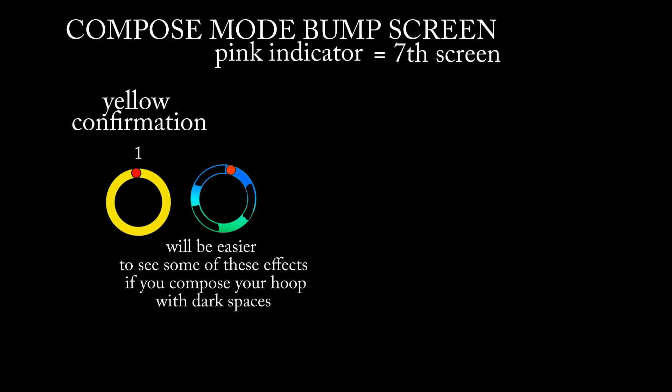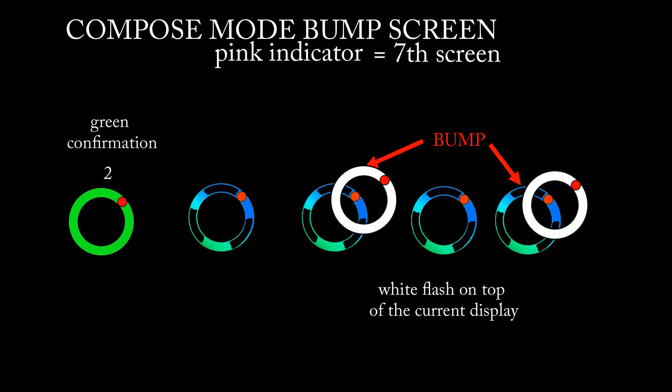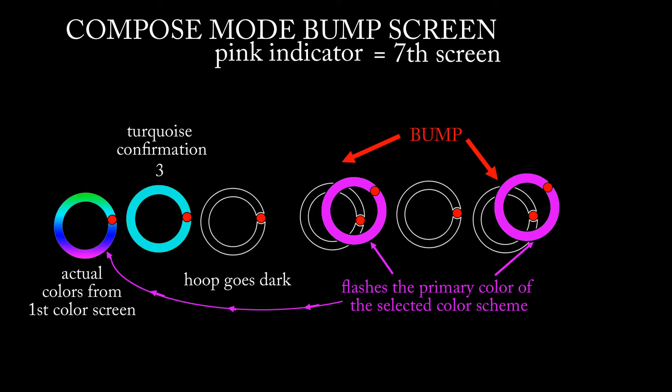The first is yellow, and that flashes the first color of the color scheme over the current display. The next is green - you get a white flash over the current display. The next is aqua - you get a dark hoop, and the first color of the color scheme flashes from the dark hoop.